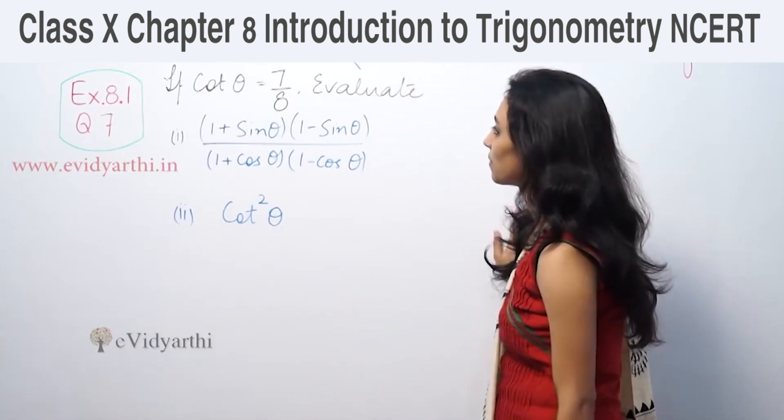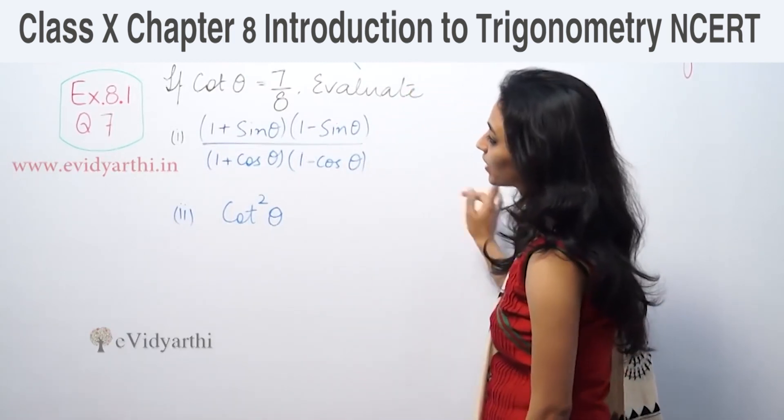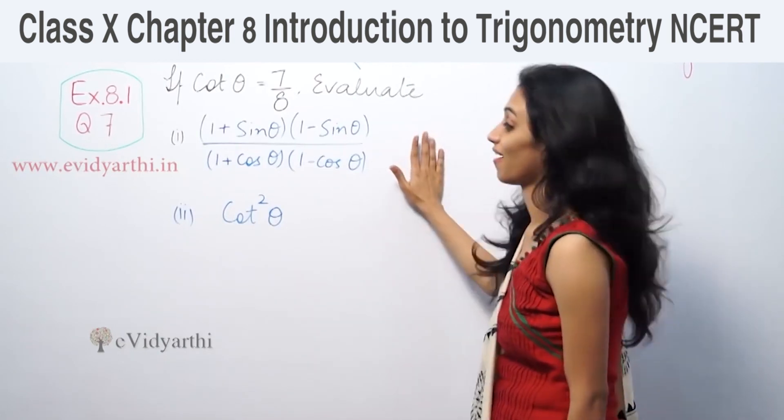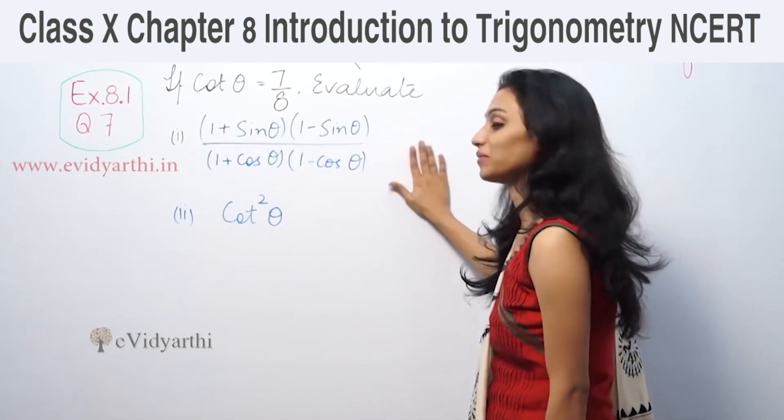Given that cos θ is equal to 7 by 8, evaluate (1 plus sin θ)(1 minus sin θ) over (1 plus cos θ)(1 minus cos θ).